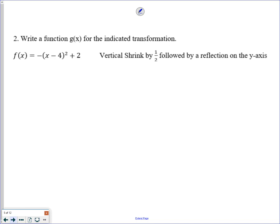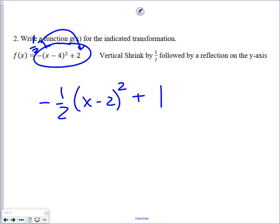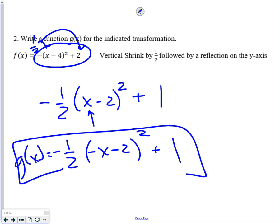Vertical shrink by a half means, again, you're taking the entire function times a half. Which makes negative a half x minus 4, quantity squared, plus 1. Notice that I multiplied both the first term and the last term by a half. And I did not distribute into the parentheses. And then a reflection on the y-axis means you're replacing x with negative x. And that will give you your g function.